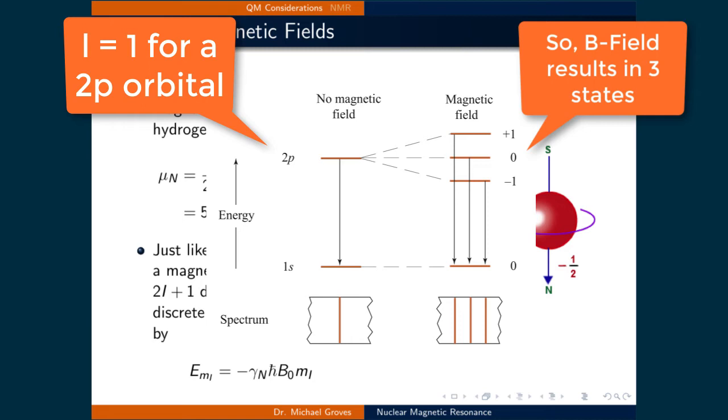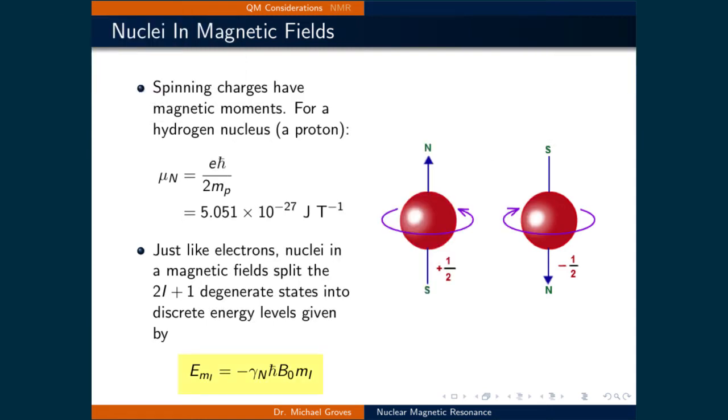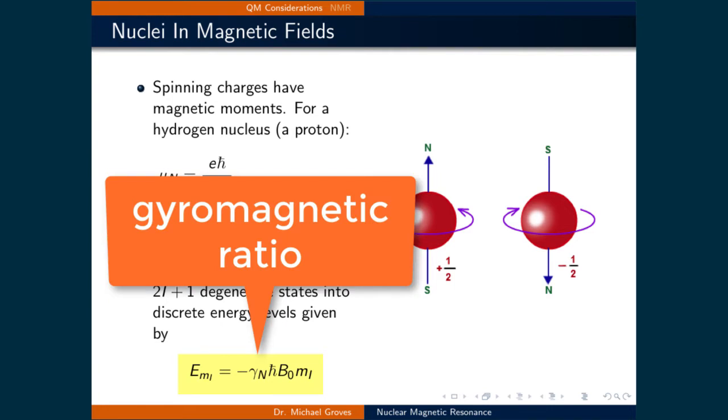Recall the Zeeman effect. Just like electrons, nuclei in a magnetic field split the 2l plus 1 degenerate states into discrete energy levels. For nuclei, the deviation in energy from the case when the magnetic field is turned off is equal to negative gamma sub n times h bar times the magnetic field B0 times m sub l, where gamma is called the gyromagnetic ratio, and is the ratio of the magnetic moment to its angular momentum.